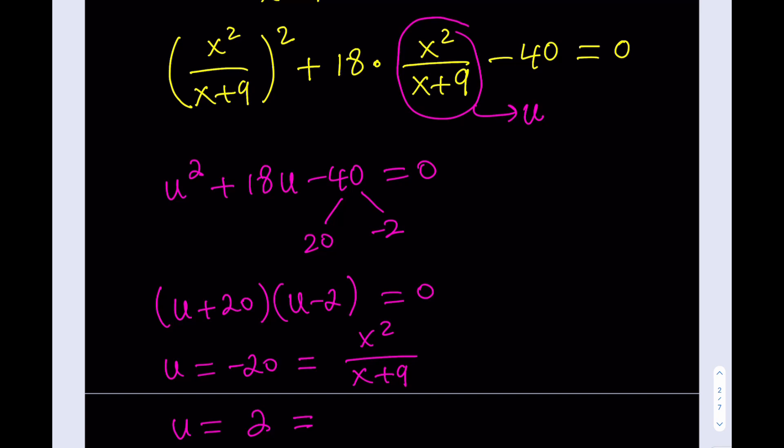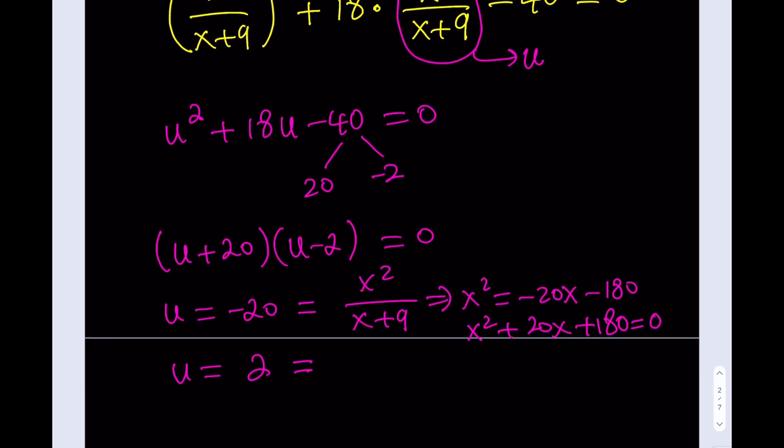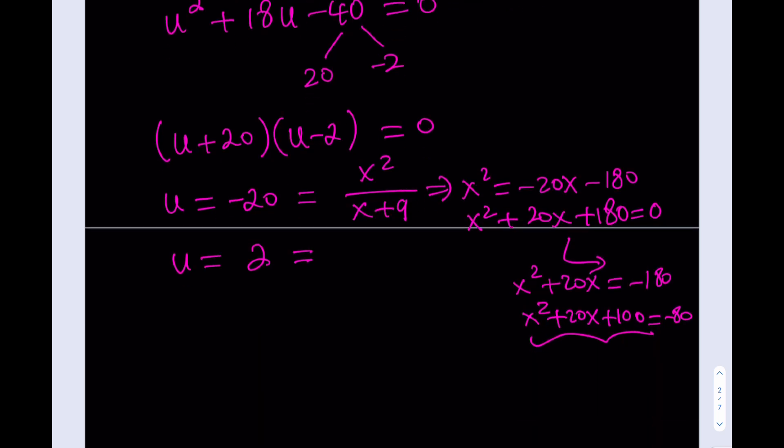But what is u? U is x squared over x plus 9. Now, we get a quadratic here. Let's cross multiply. x squared equals negative 20x minus 180. If I bring everything to the left hand side, then I should be getting something like this. This is interesting because this doesn't have any real solutions. How do we know that? Well, you can check the discriminant. You can go ahead and find the complex solutions. Let me tell you how I know that it doesn't have solutions: half of 20 is 10, if I square it I get 100. By adding 100 to both sides, I can make it a perfect square, but the right hand side is going to stay negative. This is why we don't have real solutions. If you're looking for complex, you can go that way.